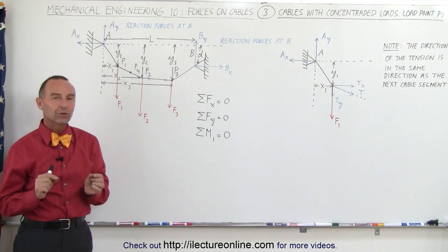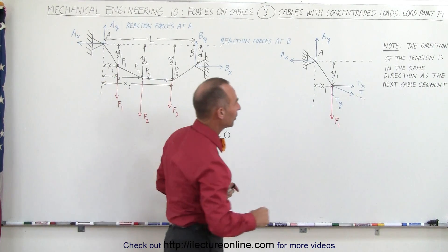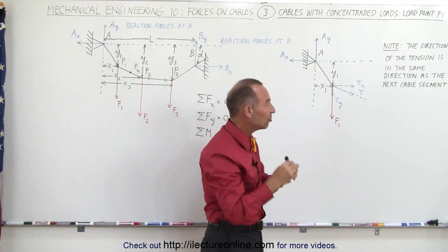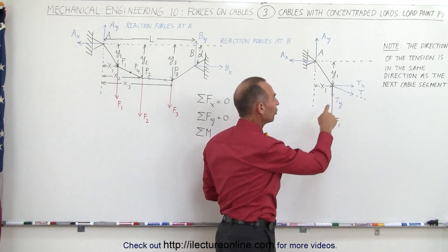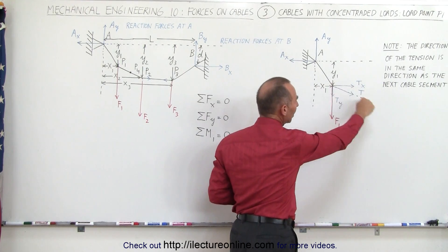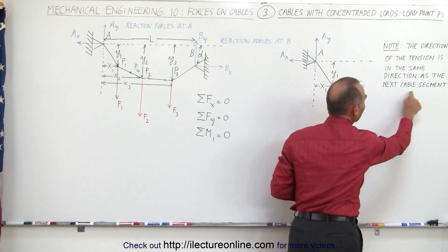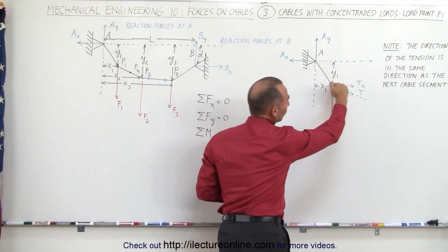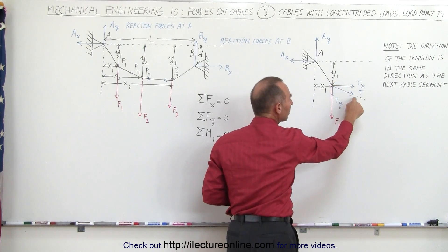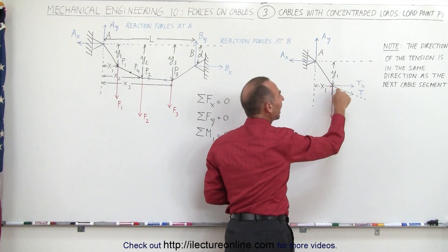Welcome to ElectronLine. Now let's take a closer look at load point 1. The forces involved here — we have a separate drawing so you can see them. Notice we still have the force pulling down called F1, but we also have the tension in the cable. The tension on the next section here is going to be pulling in the same direction as the cable. The direction of the tension is in the same direction as the next cable segment. So the tension acting on this point, due to the tension in this cable, will be in the same direction as the cable, and so it has an X and a Y component as well.